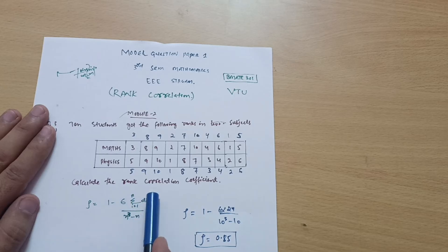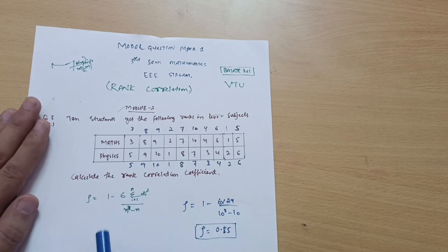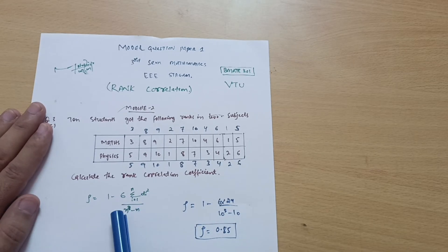The formula is 1 minus 6 times summation of di squared divided by n cubed minus n. Di squared is the difference between ranks which we calculate here. Divided by n cubed minus n, where n is the number of terms.